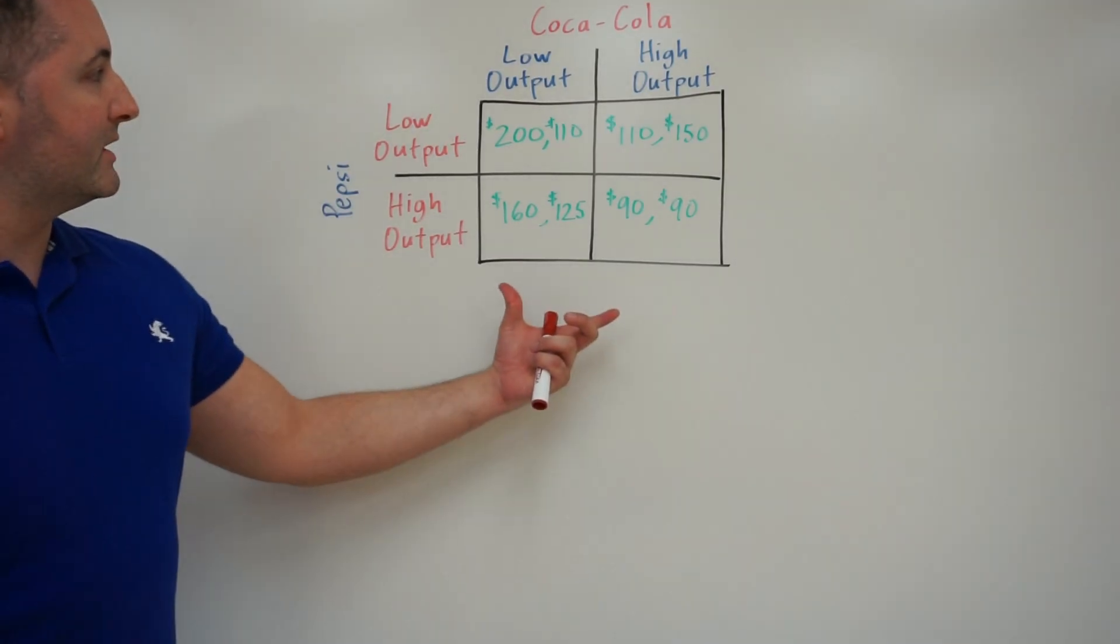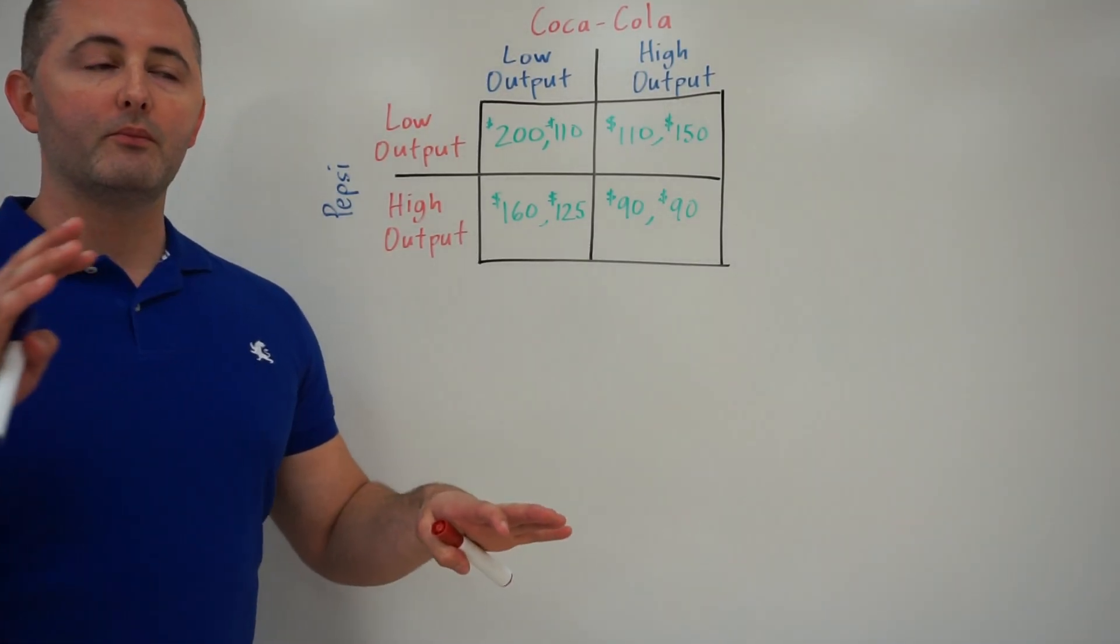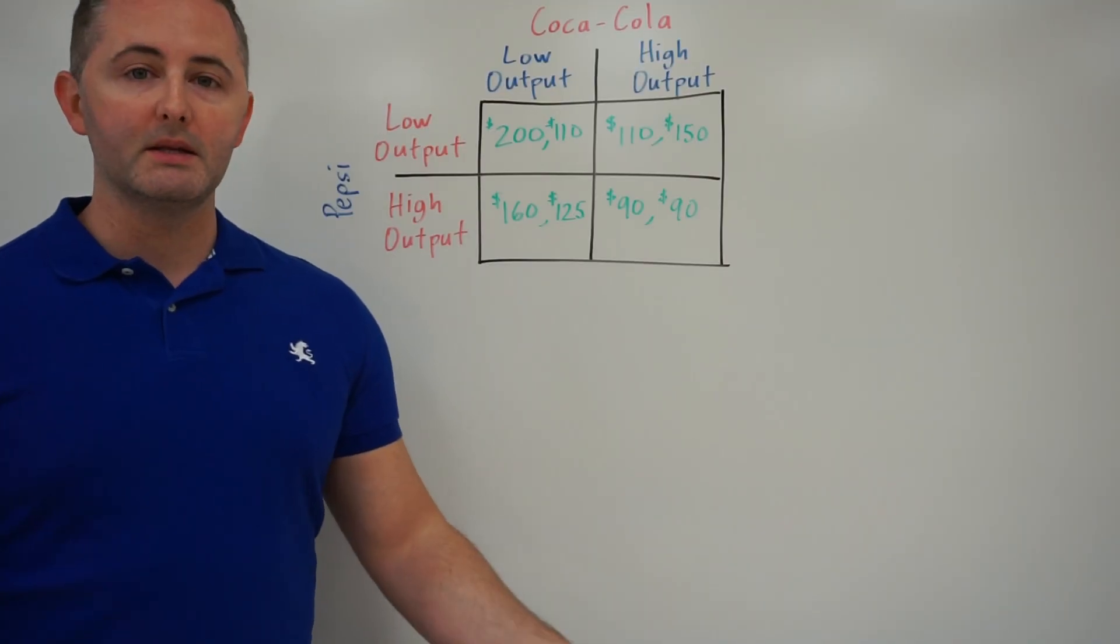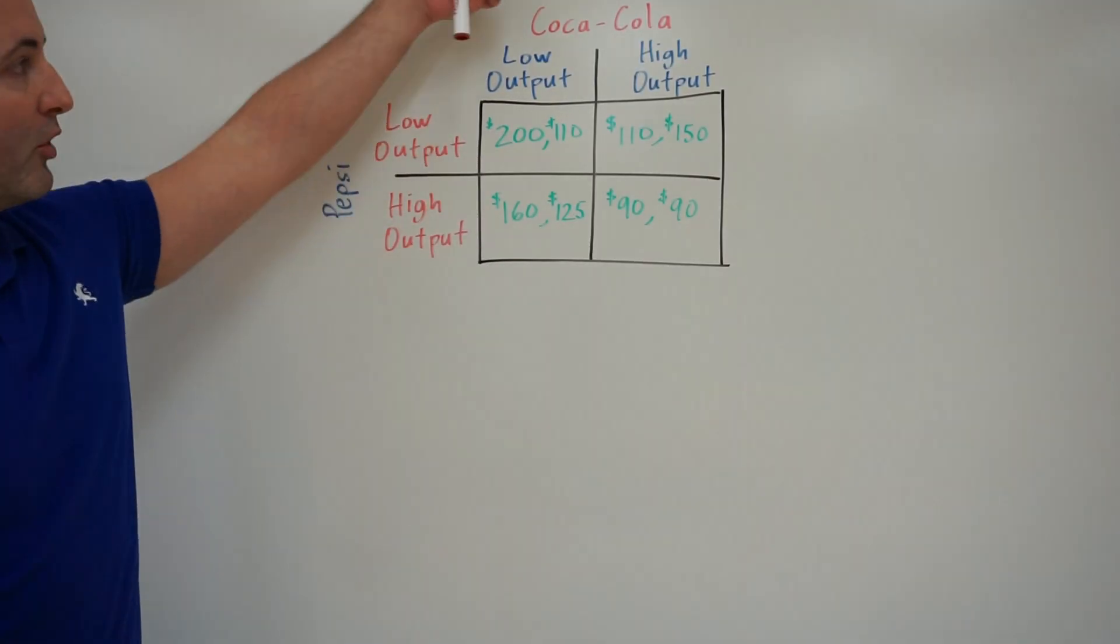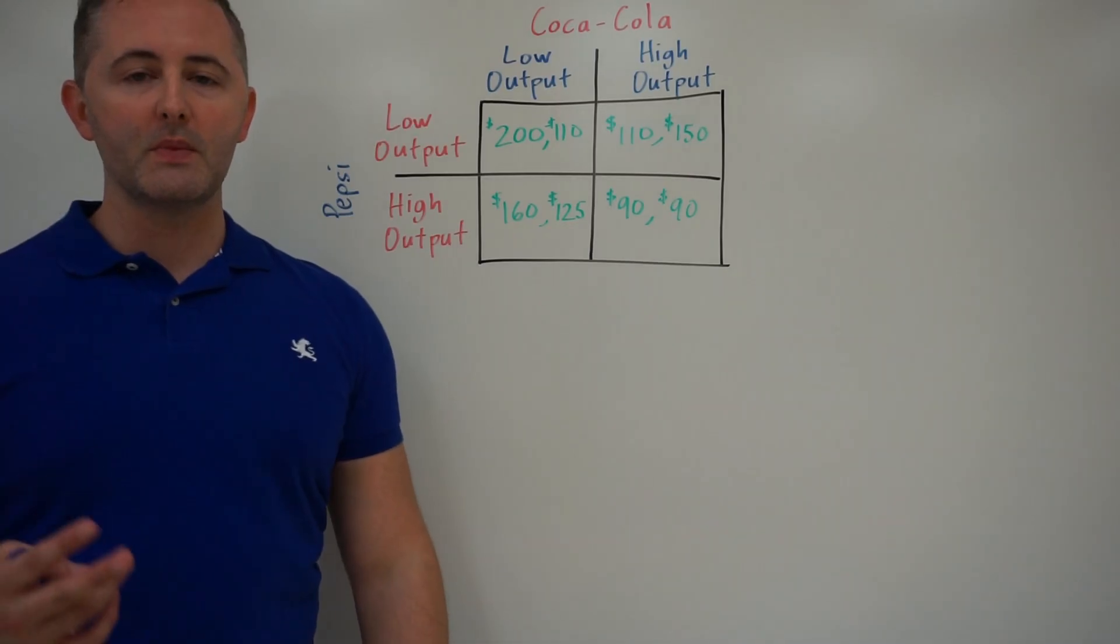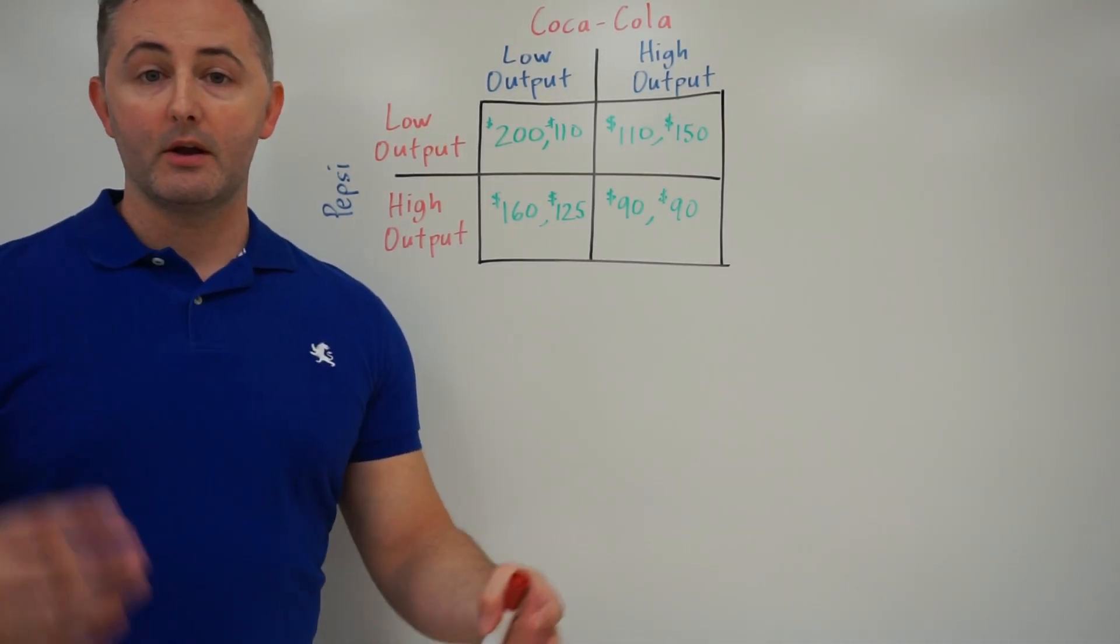Now the idea of this payoff matrix is that we're making the assumption this is a duopoly, so there's only two companies. In this case, we have Coca-Cola and Pepsi. Those are going to be our two companies. And the idea is that they're competing.